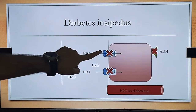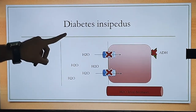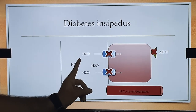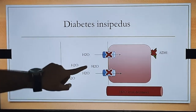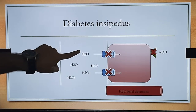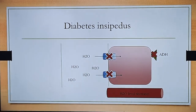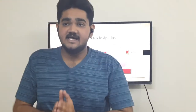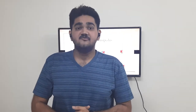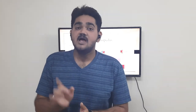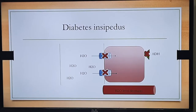Without aquaporin channels, water molecules in the tubular lumen are not reabsorbed. This water is eliminated in the urine. Since water in the urine is very high and solutes are relatively less, the urine becomes more and more diluted.